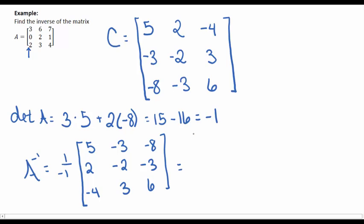Distributing the negative sign out front gives negative 5, 3, 8; negative 2, 2, 3; 4, negative 3, negative 6.